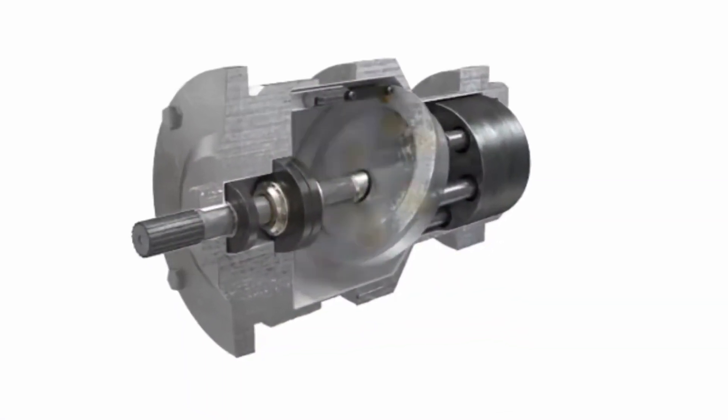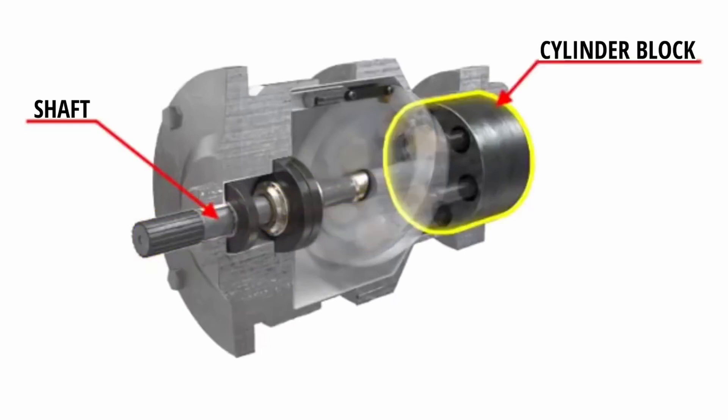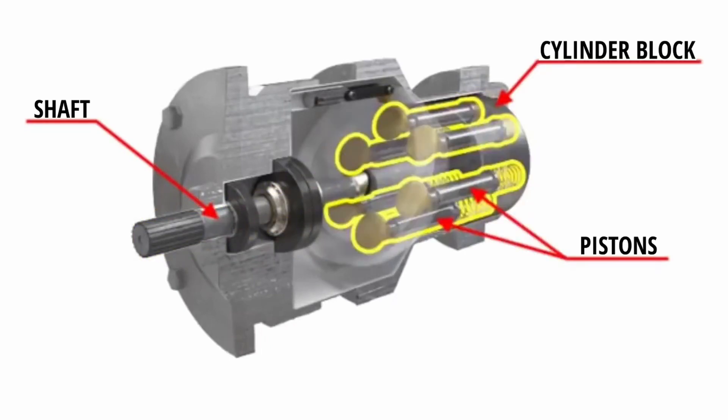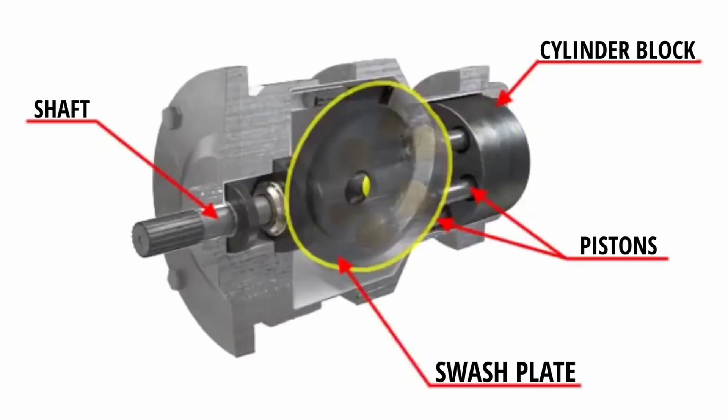Swash plate piston pumps have a rotating shaft connected to a cylinder block, which contains pistons, which are pressed against a swash plate that sits at an angle to the cylinder.